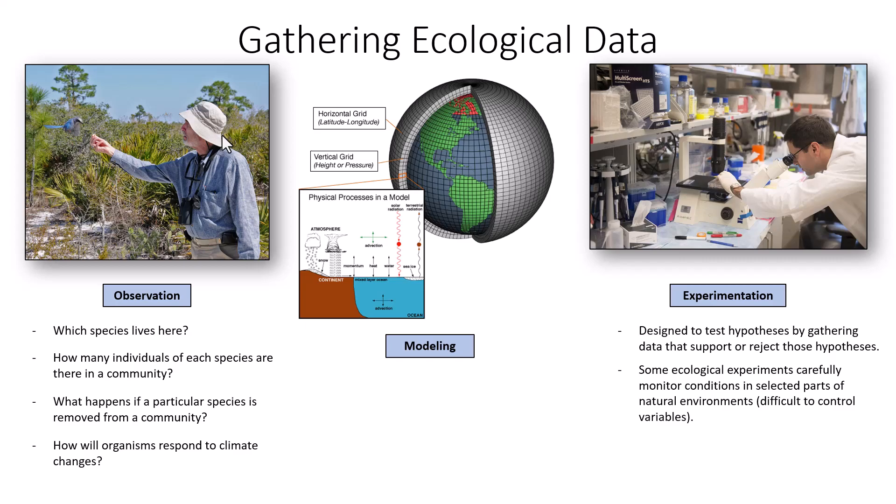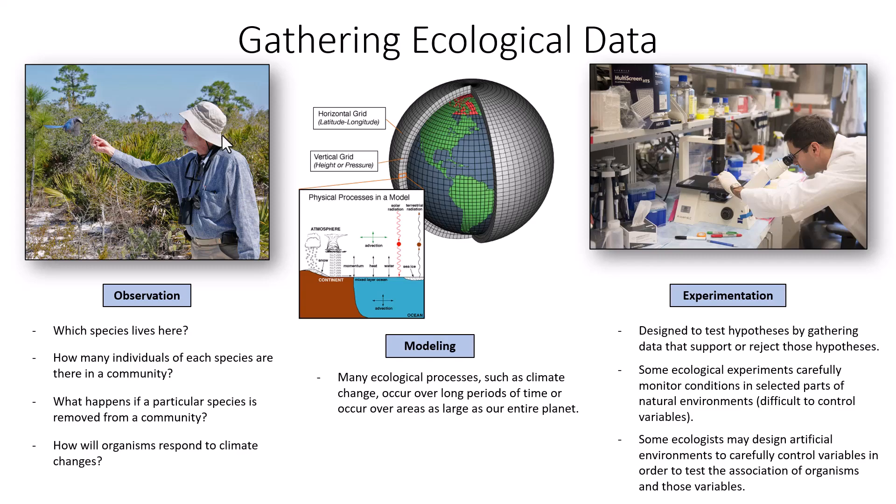If you are making observations and collecting data in natural environments, you're not going to be able to successfully control humidity, temperature, drought conditions, invasive species, fluctuations in pH, or CO2 and O2 concentrations. Some ecologists know it is difficult to control variables, so they design artificial environments — sealed chambers or sealed mesocosms — to control variables more carefully and test the association of organisms with those variables.